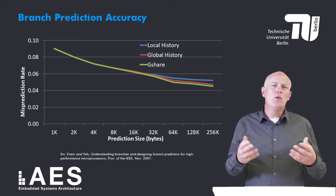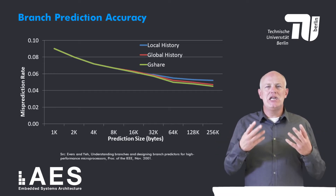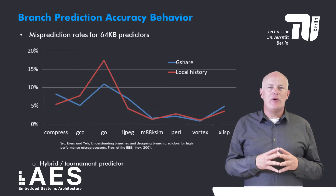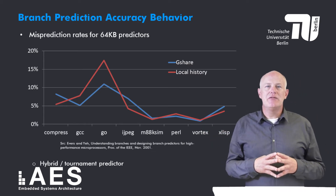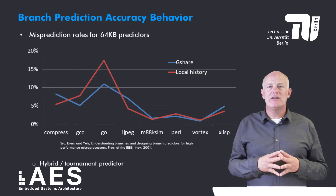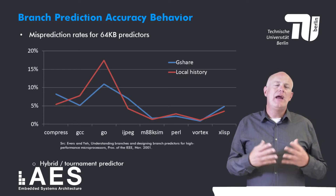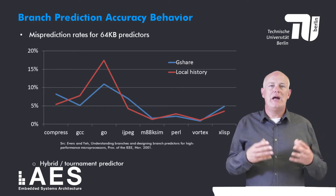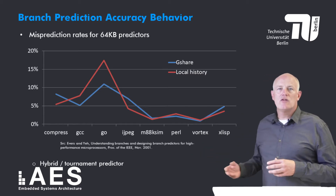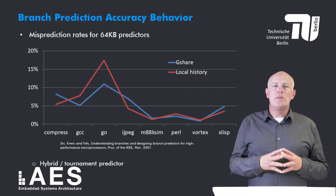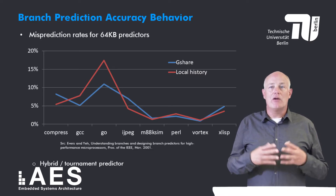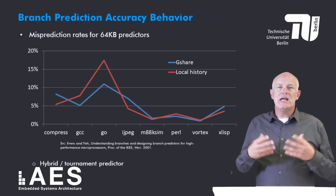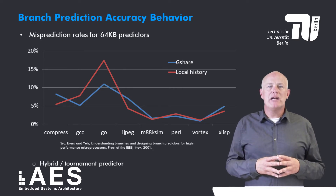I am somewhat disappointed, expecting that G-share would perform better. To gain some insight into why G-share does not perform better, this figure shows the misprediction rate for G-share and the local history branch predictor, both with a size of 64 KB, but with results shown per benchmark rather than averaged. While G-share performs better than the local history branch predictor across most benchmarks, for some — for example compress and integer JPEG — the local history branch predictor performs better.